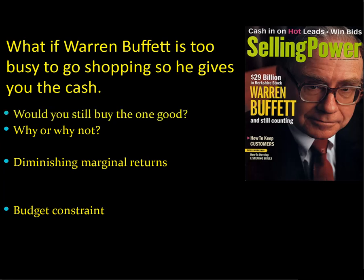Now Warren Buffett is a pretty busy guy, so let's say he doesn't want to go shopping or sit through the closing costs. So let's say he's just going to give you the cash. Would you still buy that one good? For a lot of consumers, they would not still buy the one good — they would buy multiple goods. And the reason for this is because of something called diminishing marginal returns. The additional happiness from owning that house is good, but eventually that additional happiness is going to decrease, and you'd probably like to have a basket of goods rather than just the one product.